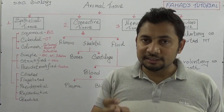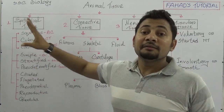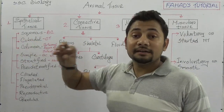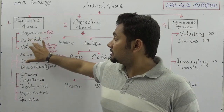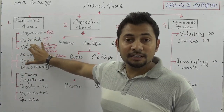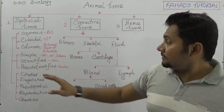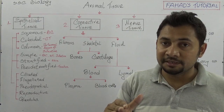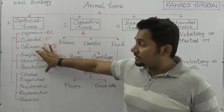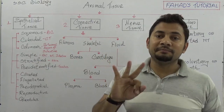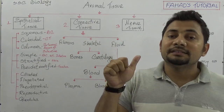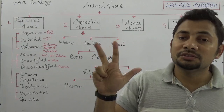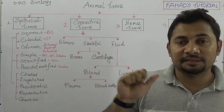Epithelial tissues are divided into three parts based on cell numbers and their position: squamous, cuboidal, and columnar. Then, based on the layers in the basement membrane, epithelial tissue is again divided into three parts: simple epithelial tissue, stratified epithelial tissue, and pseudostratified epithelial tissue.